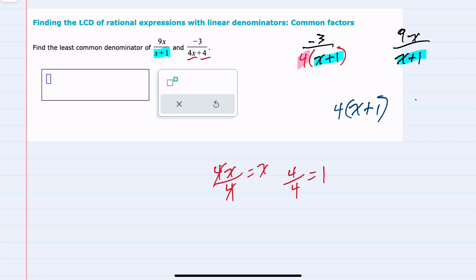One way to think of this is in the expression 4 times x plus 1, I have all of the factors in the first fraction, but I also have all of the factors in the second fraction. So this is my lowest common denominator.